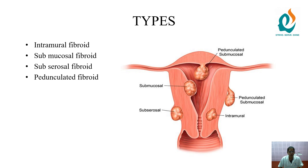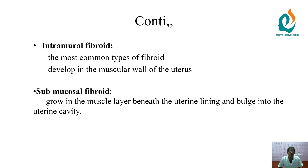The types of fibroid uterus: first is the intramural fibroid, second is the submucosal fibroid, third is the subserosal fibroid, and fourth is the pedunculated fibroid. The intramural fibroid is the most common type of fibroid, developed in the muscular wall of the uterus.